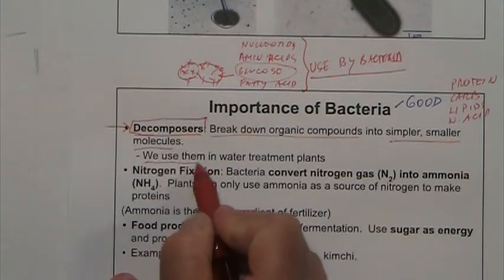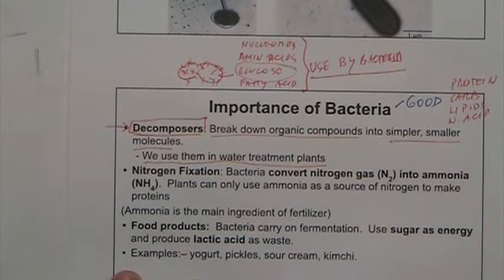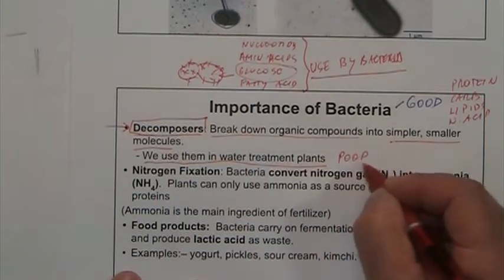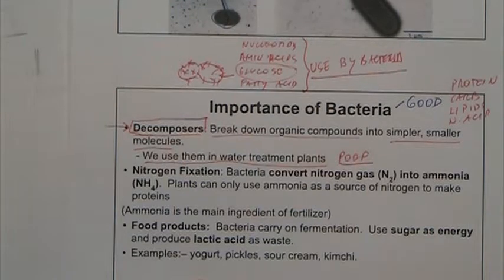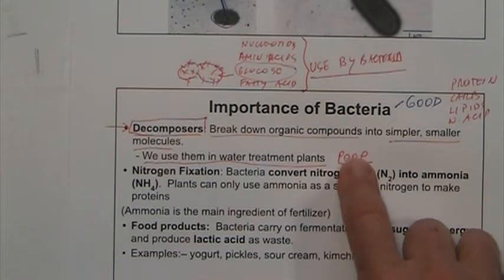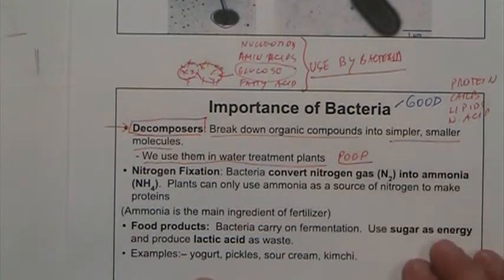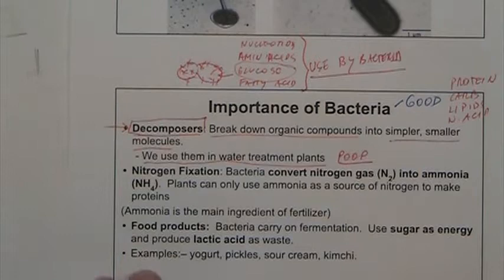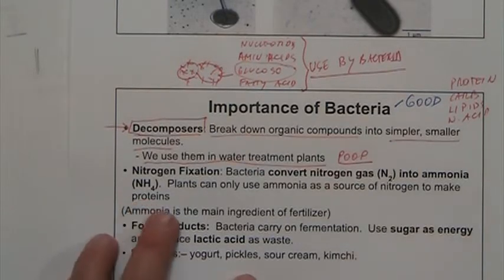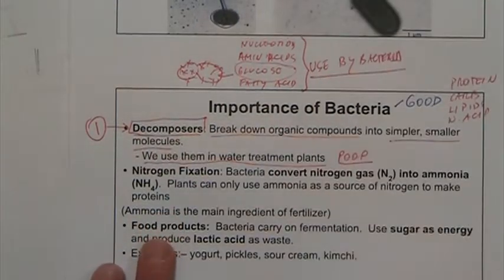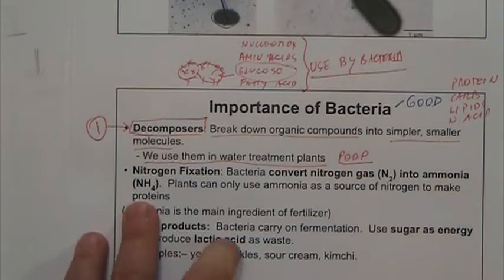Bacteria are so good at breaking down things that we use them in water treatment plants to process water and break down all the organic matter. The water treatment plants use bacteria to break everything down into basic molecules, and at the end you have clean water.